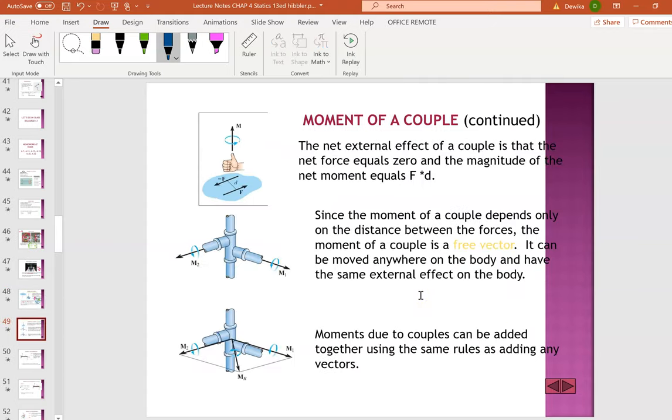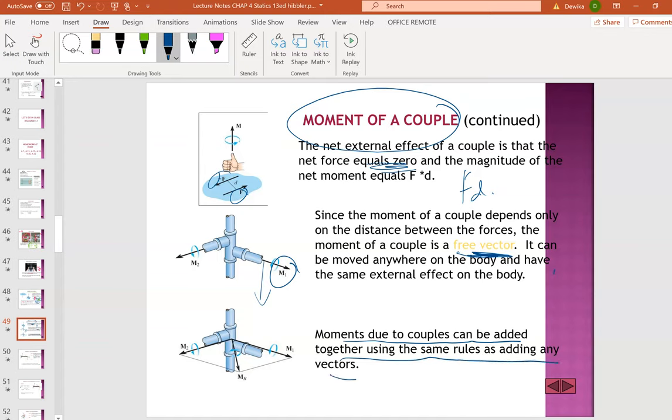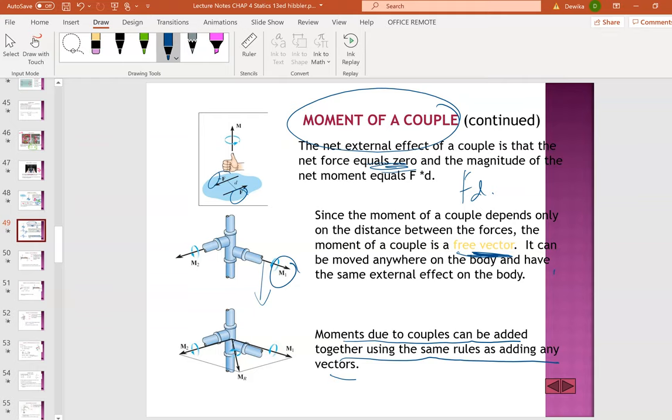So I'm going to show you a few more slides for better understanding. Of course, we're going to look at 3D. So this part, you can just read the net external forces couple is that the net force equals to zero. Of course, the net force equals to zero because this is negative and this is positive. You add up together, they will become zero. And so only then you can actually use the moment of couple formula, force times distance. So since the moment couple depends only on the distance between the forces, the moment of couple is a free vector. It can be moved anywhere in the body. You can always shift the vector anywhere, maintaining the magnitude and the direction is very important. So moment due to couples can be added together using the same rules by adding any vectors.